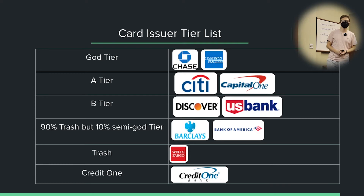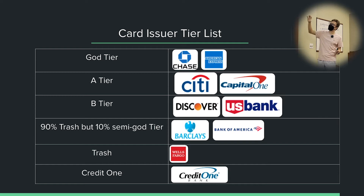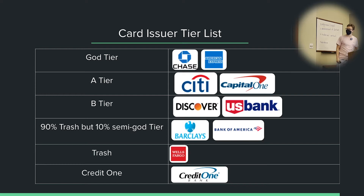Why is US Bank not in A tier? Personally, I don't have them in A tier mainly because of how difficult it is to be approved — I believe there's a rule of one inquiry every 12 months or one account every 12 months, making it very difficult to get approved for a US Bank card. And they have zero transfer partners, so it's hard to get really good value from their points. I would still put them below Citi and Capital One even if it was easier to get approved, but combined with the strict approval process, B tier it is.